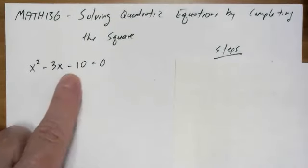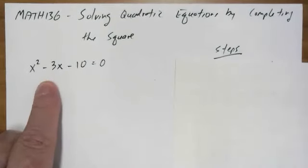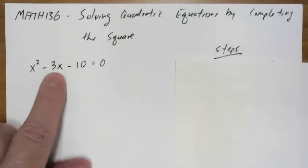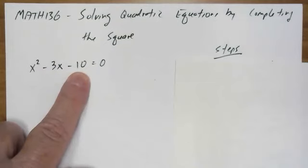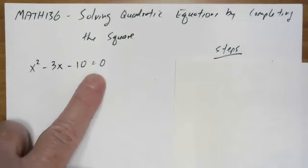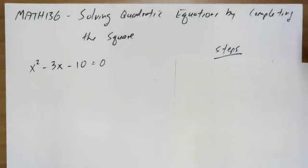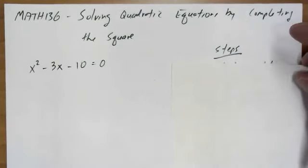So in this case, we're given a quadratic equation. Looks pretty standard. I call this the squared term, I call this the middle term, and this is the number. Normally, when we solve a quadratic equation, we want zero on one side and everything else on the other. We're going to see it's going to be a little different for this method.